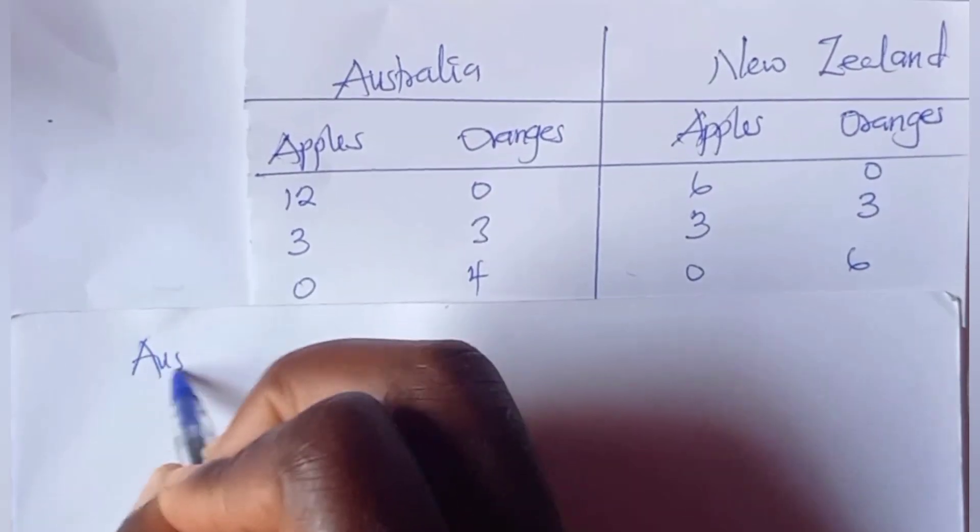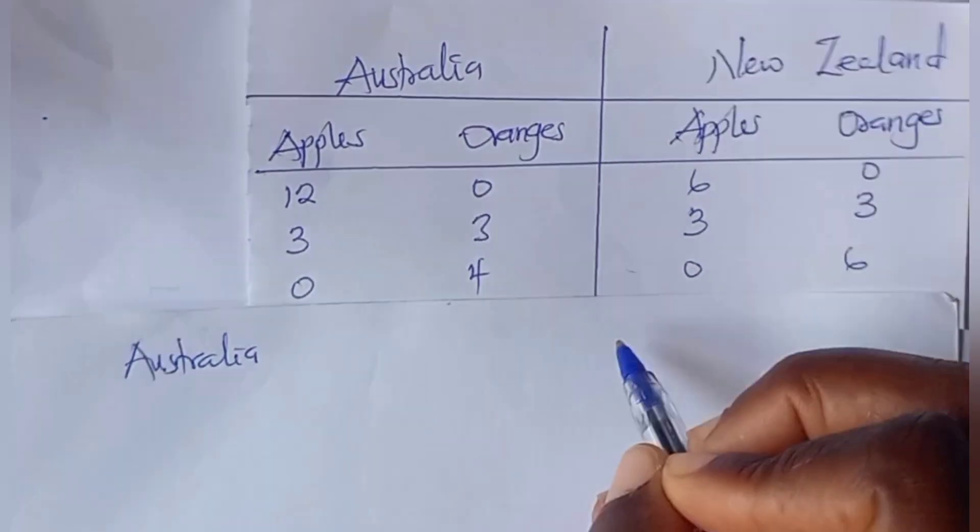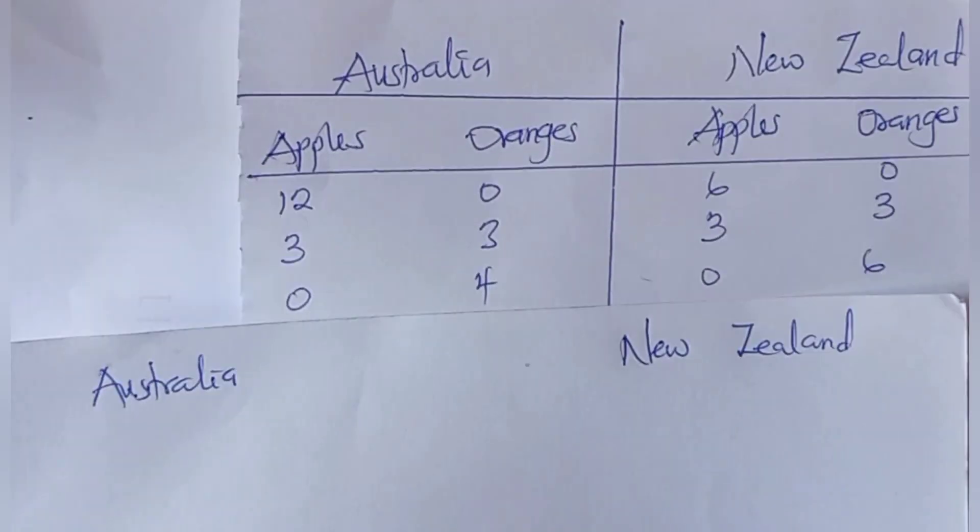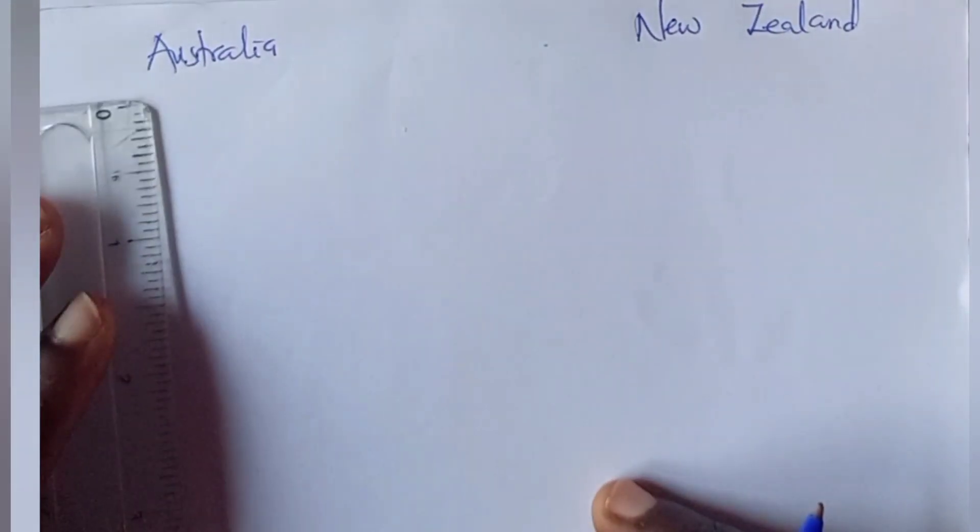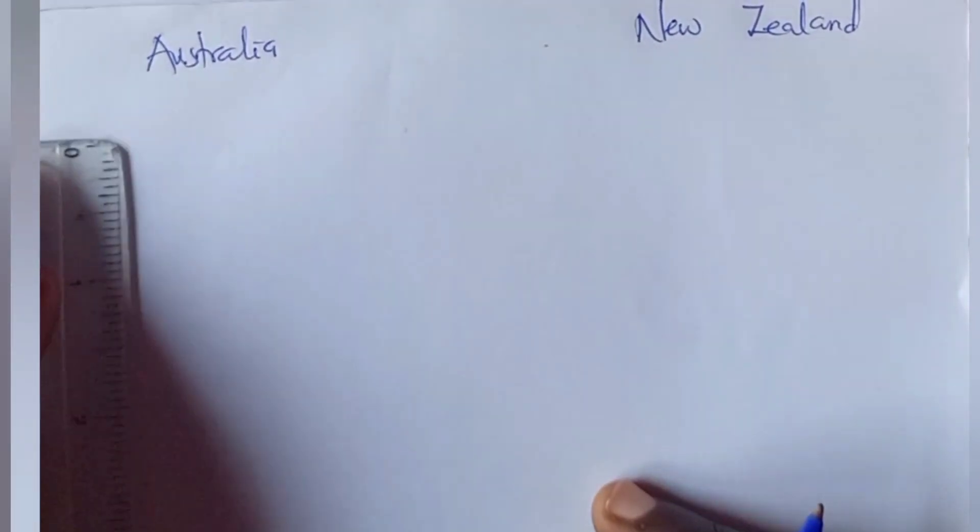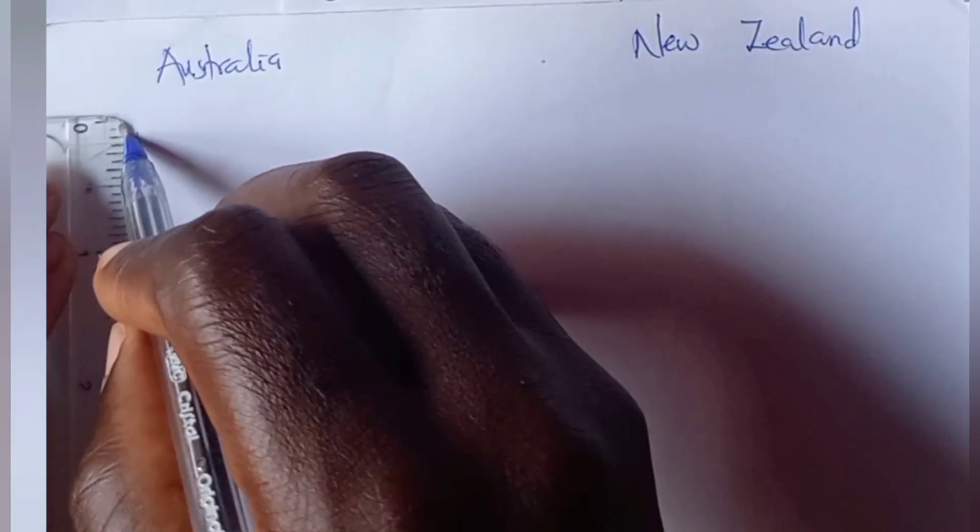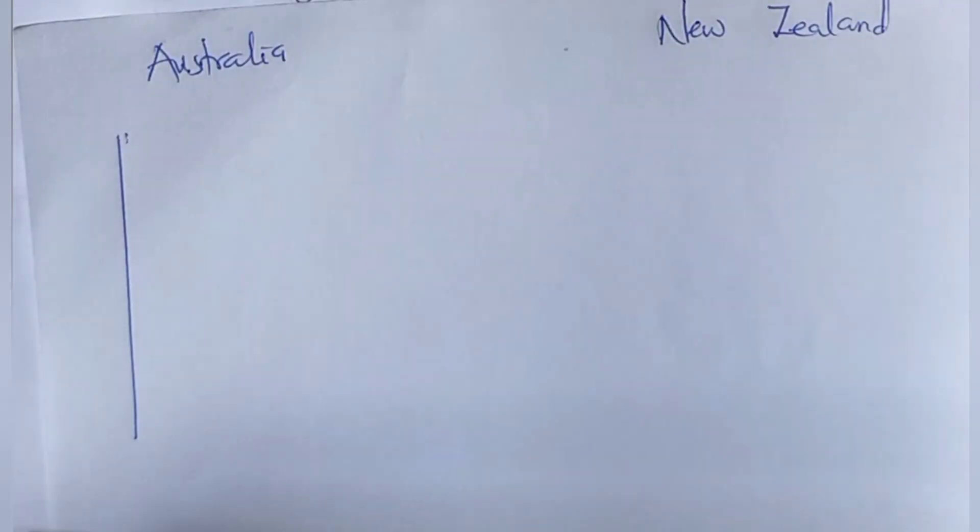We have Australia here, Australia and New Zealand. Now we have to draw - to be able to draw any curve you need your x and y axes, which every economy student should know by now. We have our y axis.